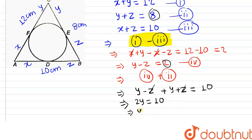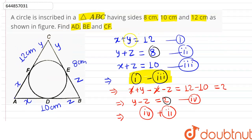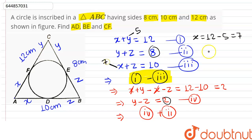From 2Y equals 10, Y equals 5. Putting Y equals 5 into equation one, X equals 12 minus 5 equals 7. Putting X equals 7 into equation three, Z equals 10 minus 7 equals 3. So AD equals X equals 7.